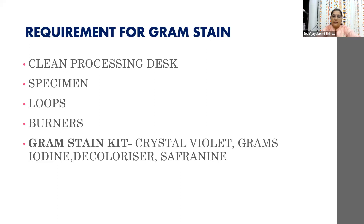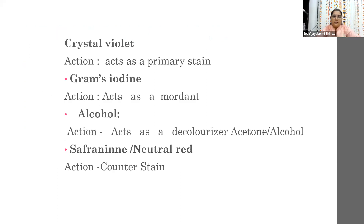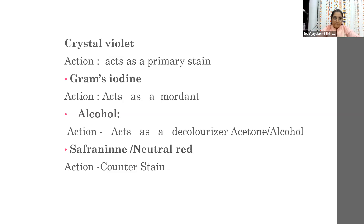The Gram stain kit mostly consists of crystal violet, Gram's iodine, decolorizer, and safranin. Crystal violet acts as the primary stain. Gram's iodine acts as a mordant. Acetone or alcohol acts as the decolorizing agent. Safranin or neutral red acts as the counter stain. So basically the kit has four bottles: crystal violet, Gram's iodine, alcohol, and safranin or neutral red.